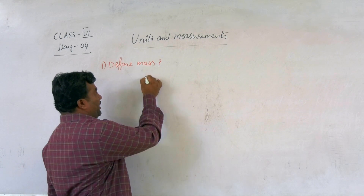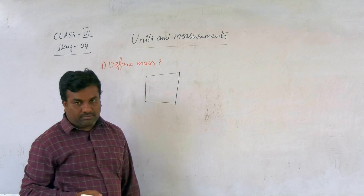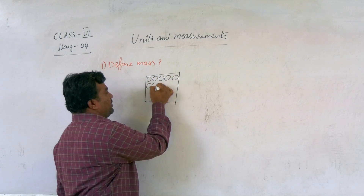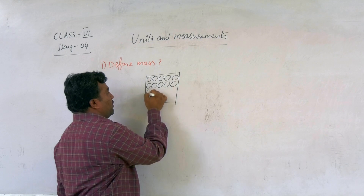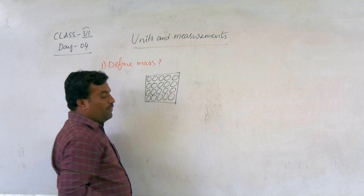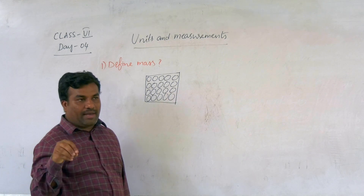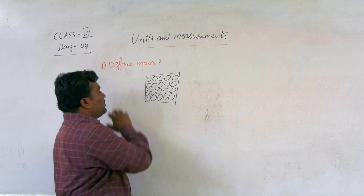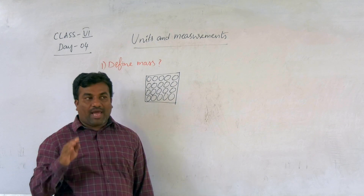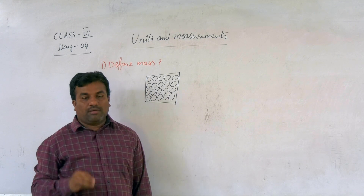Suppose we take a body — the body contains matter. We have so many molecules inside in a particular arrangement. That's why the quantity of matter contained in any object is called mass. Mass is a measure of the amount of matter in an object.